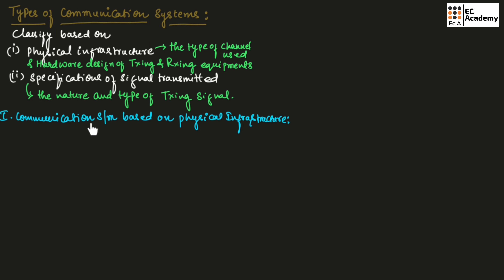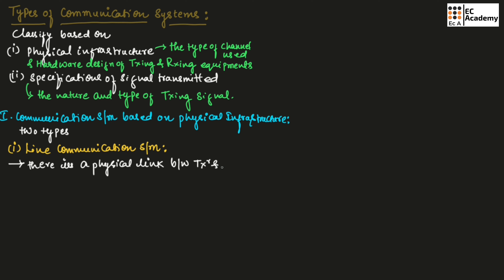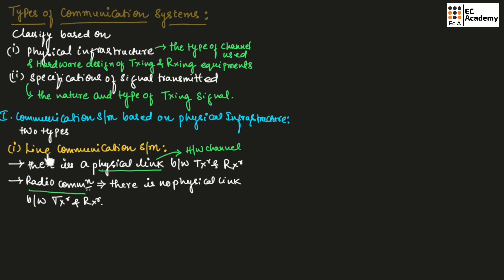First, let us understand the types of communication system based on physical infrastructure. There are two types. The first one is the line communication system. In line communication system, there is a physical link between transmitter and receiver, which means there is a hardware channel between transmitter and receiver.